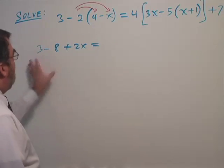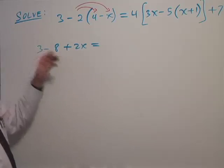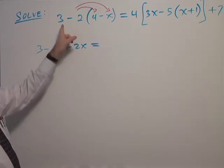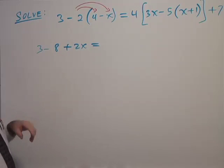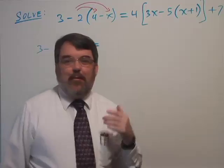One other thing on the left side here: notice I did not first subtract 3 minus 2. Do you know why? Why don't I go 3 minus 2 and get 1? It's because of the order of operations in algebra.